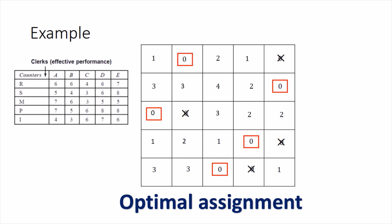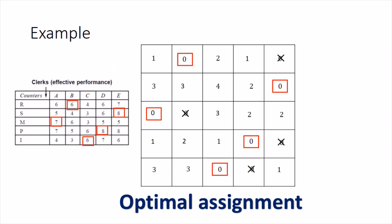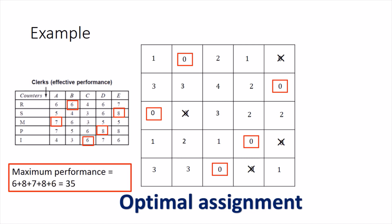Clerk A has got counter M, clerk B has got counter R, C has got I, D has got P, and E has got S. The maximum performance is computed by adding up these values from the original table: 6 + 7 + 8 + 8 + 6 = 35. Always remember: whenever computing the value of the objective function in a maximization problem, use the original table, not the converted one.